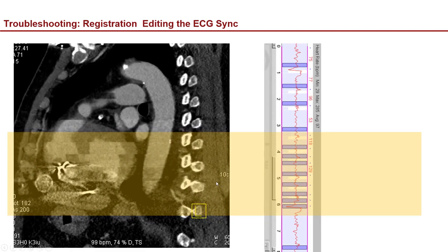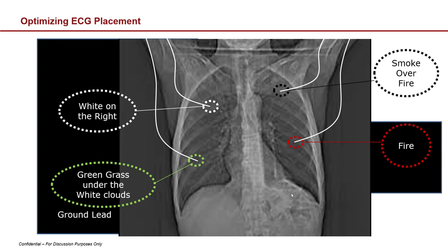To troubleshoot your ECG, remember the very beginning of your scan represents the beginning image. If you're starting from the top and moving to the bottom, the last reconstruction comes from the bottom. If you see a bunch of artifacts, look at your horizontal ECG tracing and ask yourself if it's really accurate. Sometimes it's not, and you can tell why you're having problems.